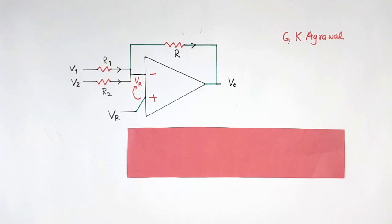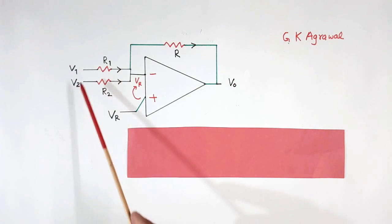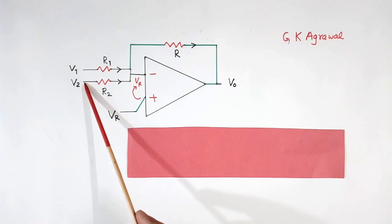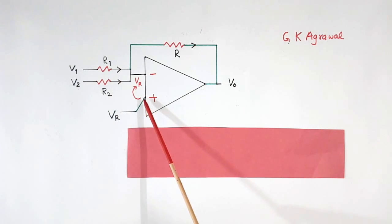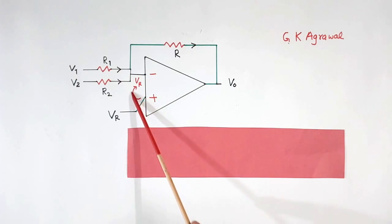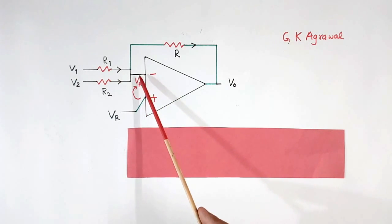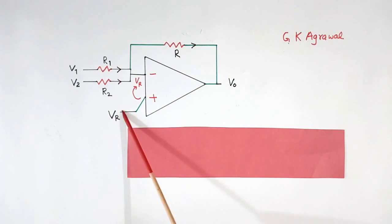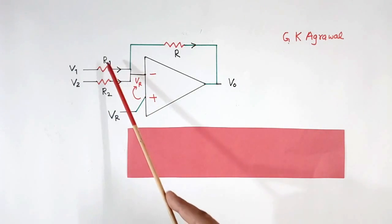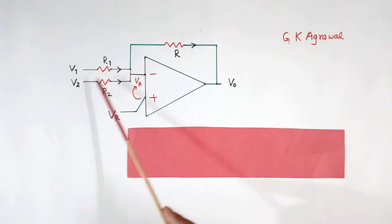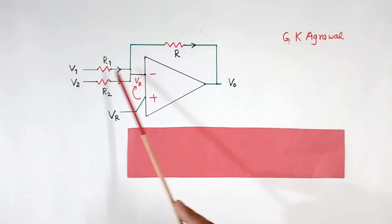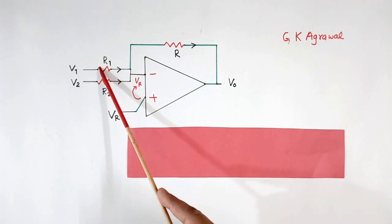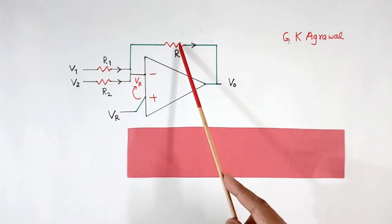Now this is the second circuit. We have two inputs in this circuit. Again we will use those two rules. First rule: whatever voltage is at the positive input, the same voltage will appear at the negative terminal — so the voltage at the negative terminal will be Vr. Second rule: the total input current will be equal to the feedback current. If one input resistor is there, that current equals feedback current. If two input resistors, then the sum of both currents equals the feedback current.